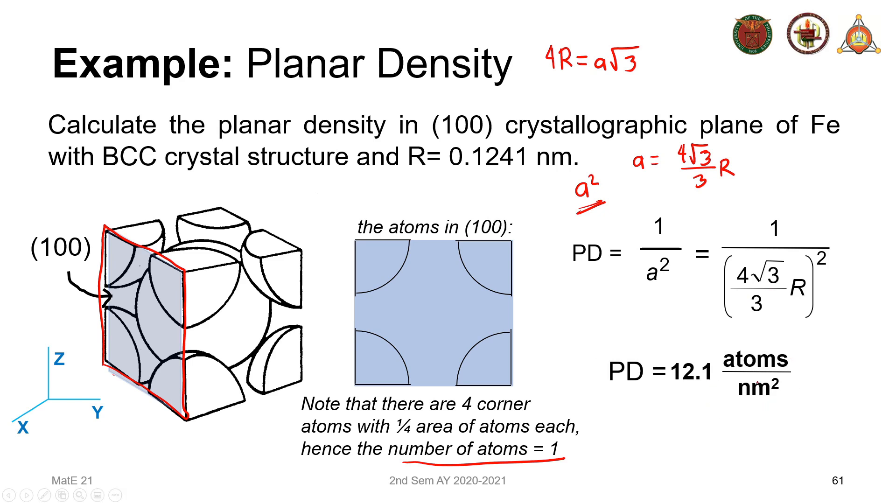Or there will be 12.1 atoms per every square nanometer in our (100) plane of iron.